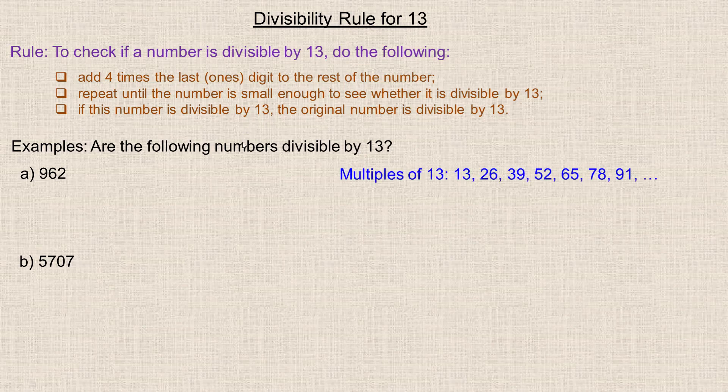So I thought it might be convenient to list the first several multiples first. So the first seven multiples of 13 are 13, 26, 39, 52, 65, 78, and 91. You can keep on going if you want. If we add 13 to this, we get 104, that would be the next number. So the question is, are the following numbers divisible by 13?